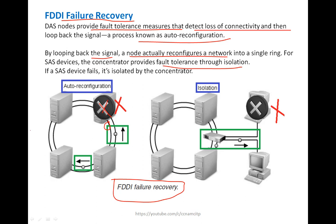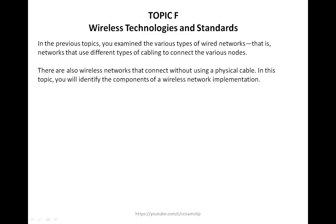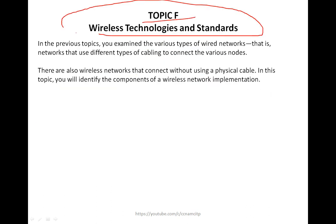In a DAS situation, the secondary cable takes charge when the primary fails. If a node fails, it goes into isolation mode. This is the recovery concept in FDDI failure. That concludes Topic E, and now we move on to Topic F: Wireless Technology Standards.